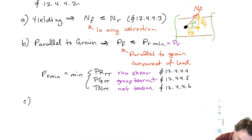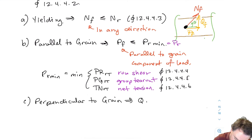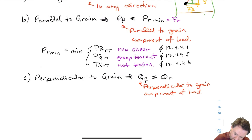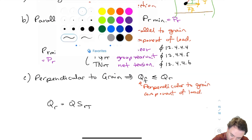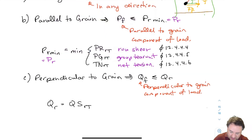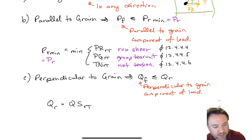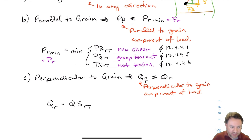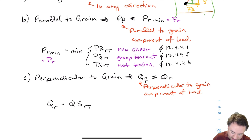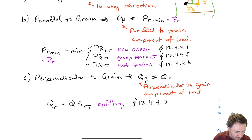Then we do the same for perpendicular to grain. In this case, there is only one perpendicular-to-grain failure mode, which is the splitting failure mode. So QR is just equal to QSRT, which is the total splitting resistance.